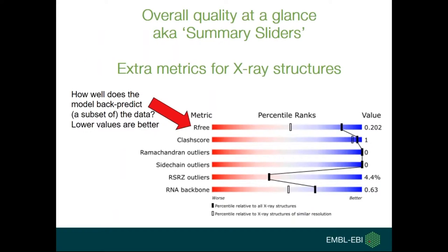For X-ray structures, there are two extra metrics. The first is R-free: without going into the maths of crystallography, this measures how well the model back-predicts a small subset of the data — how close does the back-calculated ideal data fit with the real data? Lower values are better. For macromolecular structures like proteins, a value around 0.2 is typically expected; between 0.15 and 0.3 is reasonable. For small molecule crystallography you get down to 0.02–0.05. A value around 0.5–0.6 is essentially random.